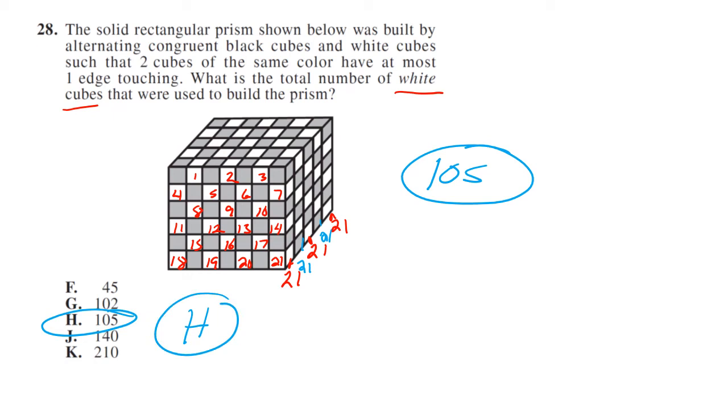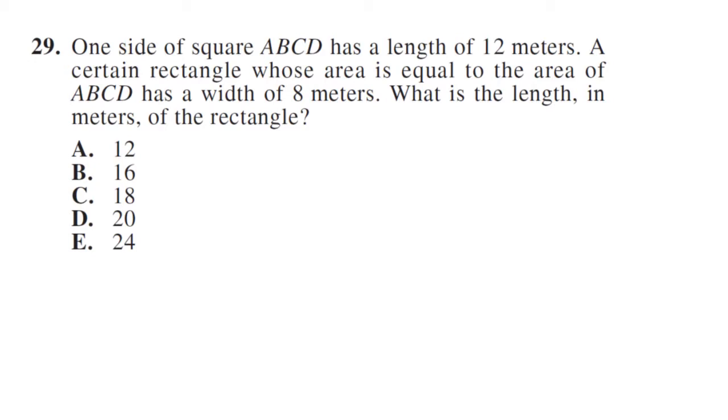So your answer is H. There may be some formula to do this one, but I think it's a lot easier just to count and move on. One side of a square has a length of 12 meters. Square means all sides are equal, so 12, that means the other side is also 12. A certain rectangle whose area is equal has a width of 8, so a width of 8, and we don't know the length.